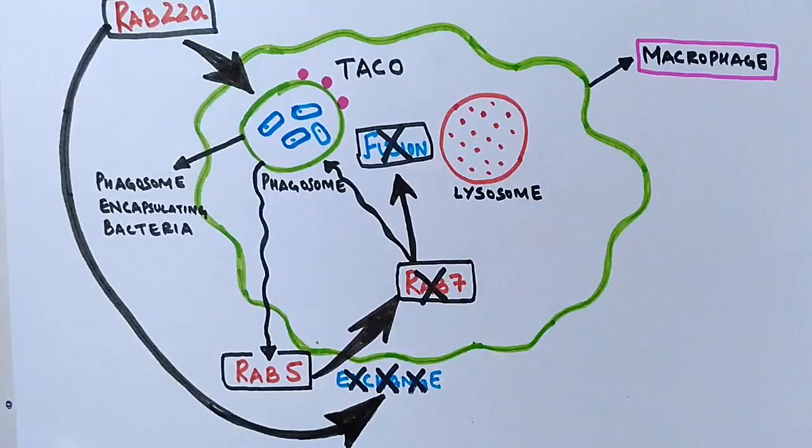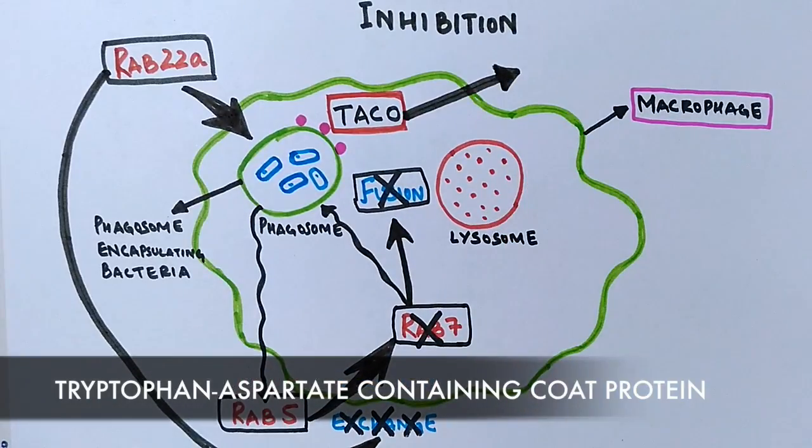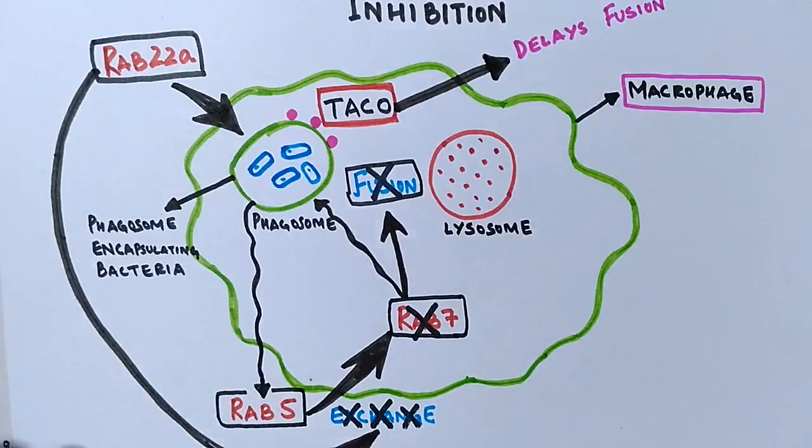Also there is another protein called tethering protein present on the phagosome. The detachment of tethering protein leads to the delivery of phagosome towards lysosome. But in case of tuberculosis the tethering protein is retained on phagosome which halts the fusion also.